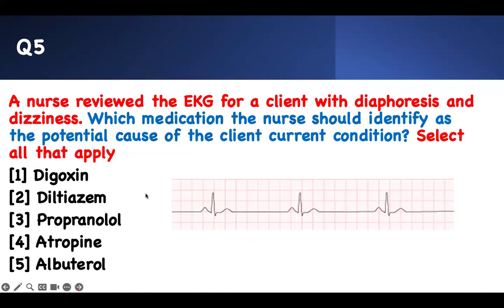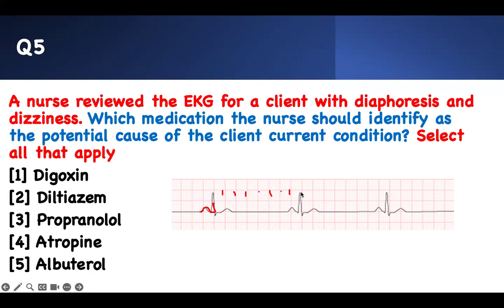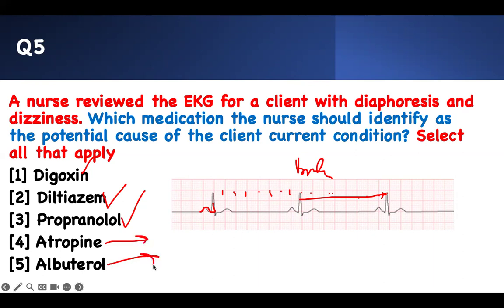Number five: review the EKG for a client with dysphoresis and dizziness — which medication is the potential cause? Looking at the rhythm strip, you can see P-Q-R-S complexes repeating in a regular sinus pattern. Counting the beats, the rate is approximately eight per six-second strip — severe bradycardia. So the patient has sinus bradycardia. Medications that cause sinus brady include digoxin, diltiazem (a calcium channel blocker), and beta blockers. Atropine speeds up the heart rate, and albuterol is a beta agonist that speeds it up. So digoxin, diltiazem, and the beta blocker are the correct answers.